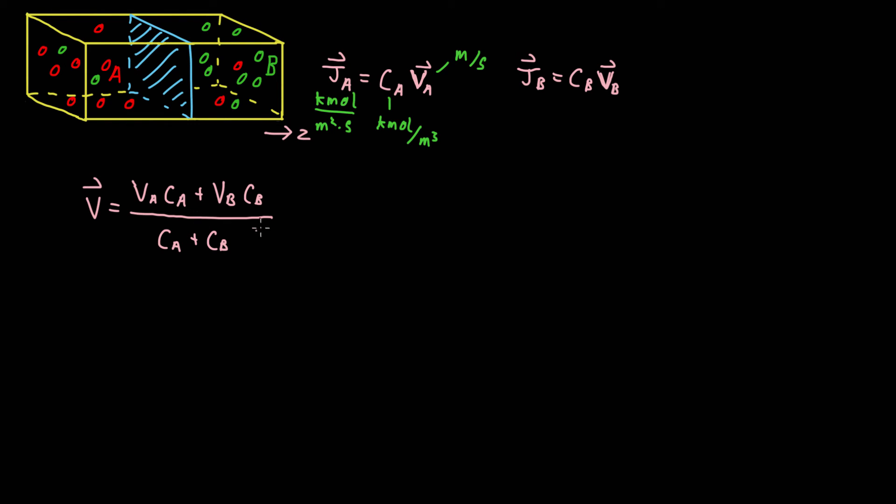Now I'm going to impose a condition on the system to say that we have a stationary medium. What this stationary medium means is that the net velocity of the system is zero. If that's the case,